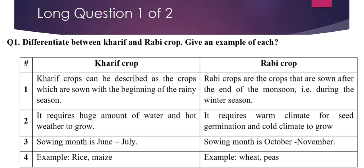Now let's look at the difference between Kharif and Rabi crops. So let's look at the examples of Kharif crops and Rabi crops. Kharif crops can be described as crops which are sown in the beginning of the rainy season.